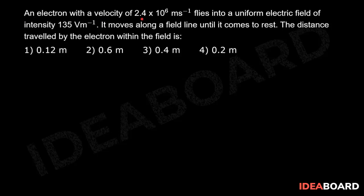An electron with a velocity of 2.4 × 10^6 m/s flies into a uniform electric field of intensity 135 V/m. It moves along a field line until it comes to rest. The distance traveled by the electron within the field is...